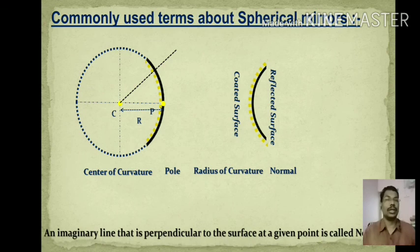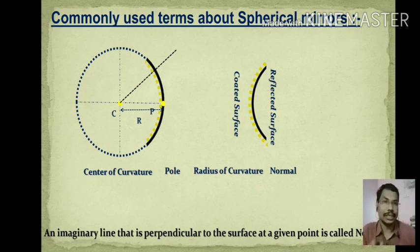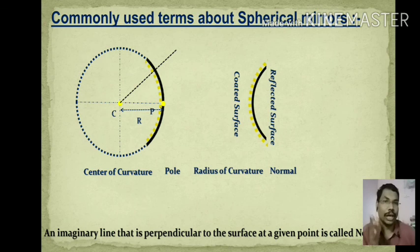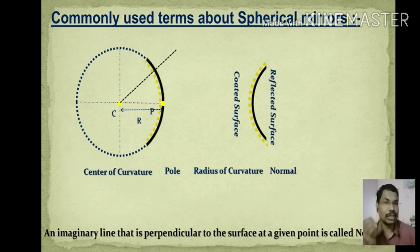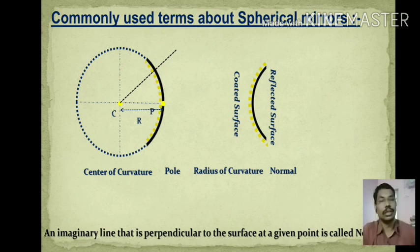A normal is an imaginary line perpendicular to the surface at a given point. Since the mirror is part of a circle, at any point of contact a tangent exists, and the perpendicular to the tangent is always the radius. Therefore, the radius is taken as the normal to the spherical surface at that point.